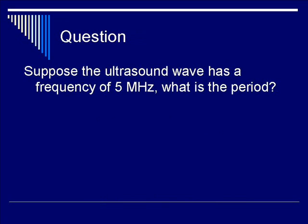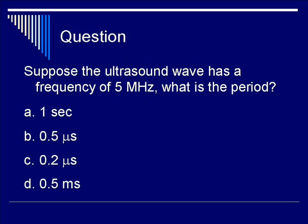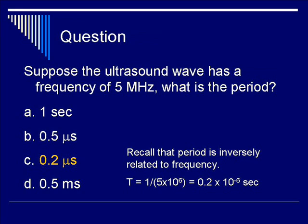Let's do a question. Suppose the ultrasound wave has a frequency of 5 MHz. What is the period? Is the answer A, 1 second? B, 0.5 microseconds? C, 0.2 microseconds? Or D, 0.5 milliseconds? The correct answer is C, 0.2 microseconds. Bear in mind that the period is equal to 1 over the frequency, which is 1 over 5 times 10 to the 6 Hz, giving you 0.2 times 10 to the minus 6 seconds, or 0.2 microseconds.